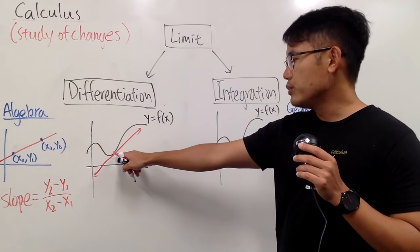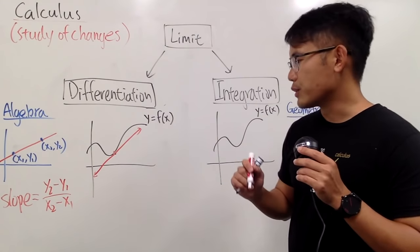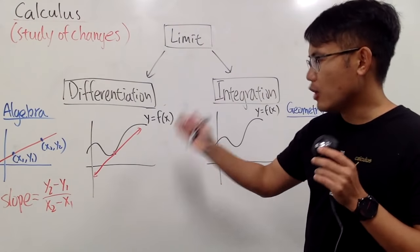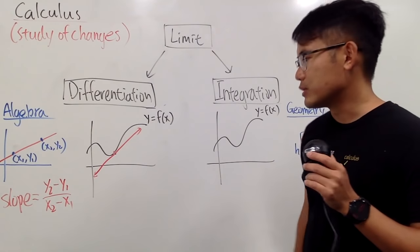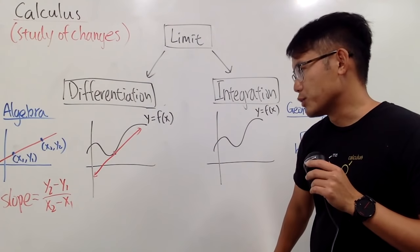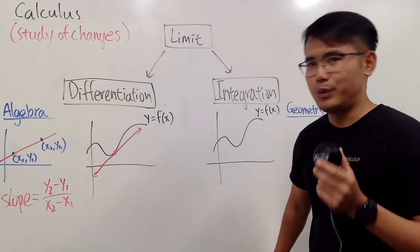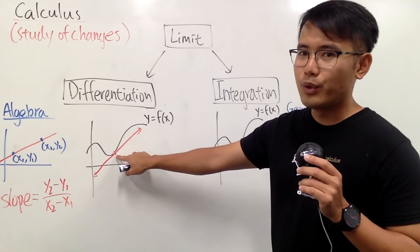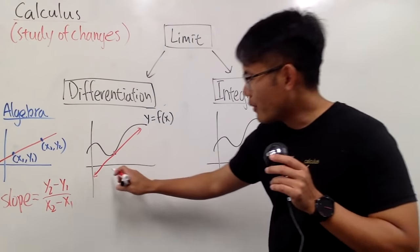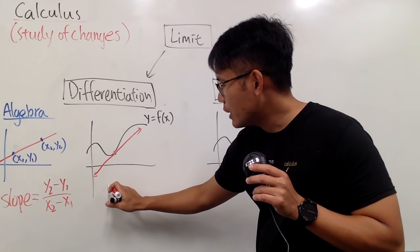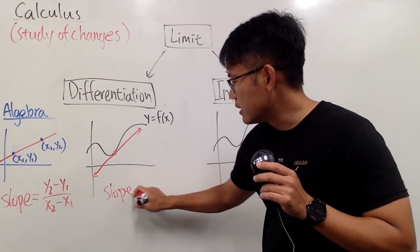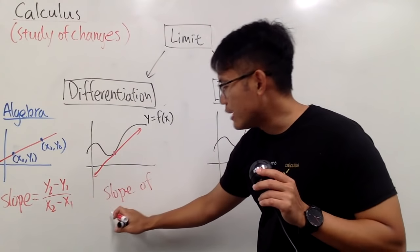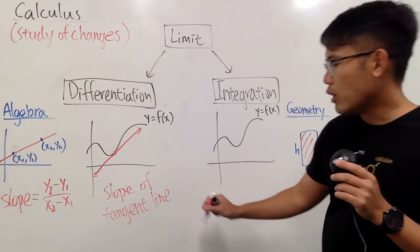Maybe you know the coordinate of this point. Here's the question: this is a line, so of course it also has a slope. But how can we find the slope of this line? Because this time we only have one point. How can we find the slope of this tangent line?